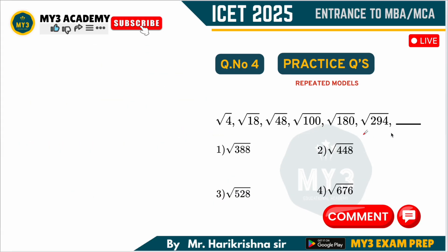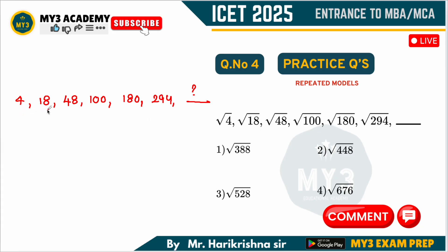In the next question, the values are given in the form of a root. The numbers available inside the root are: 4, 18, 48, 100, 180, 294. To find the next term, let us observe these numbers. 4 is nothing but 2². But 18 is not 3² — 3² is 9, and 9 × 2 = 18. The next term is 48: if you take 4², that is 16, and 16 × 3 = 48.